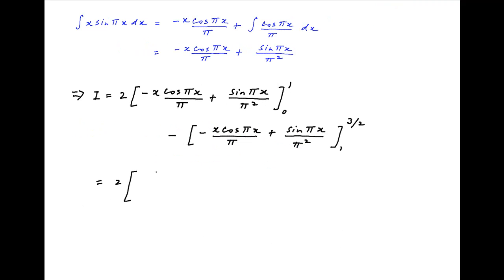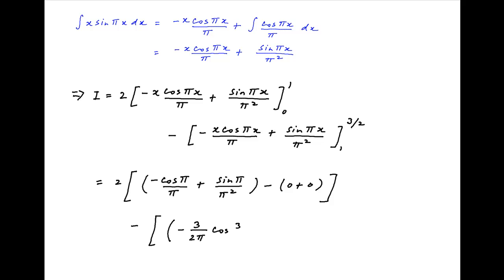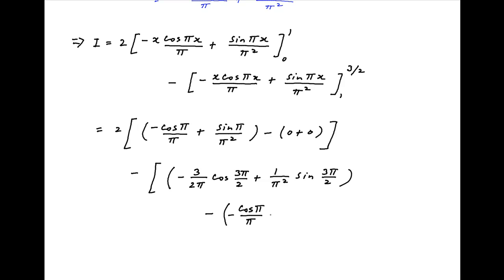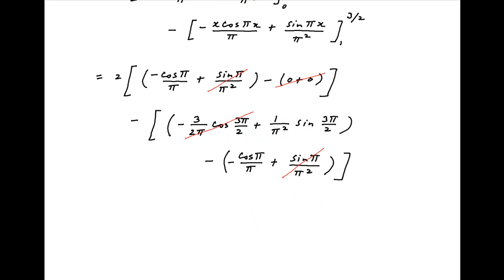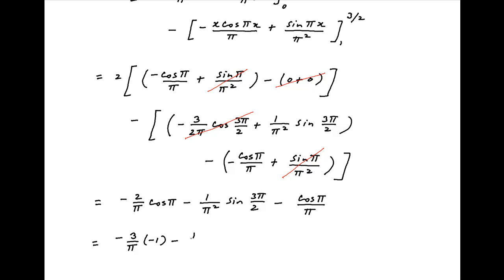Putting in the limits, I equals 2 times [(-cos(π)/π + sin(π)/π²) - (0 + 0)], minus [(-3/(2π))·cos(3π/2) + (1/π²)·sin(3π/2)] plus [-cos(π)/π + sin(π)/π²]. Since sin(π) = 0 and cos(3π/2) = 0, this simplifies to -2cos(π)/π - (1/π²)·sin(3π/2) - cos(π)/π. Since cos(π) = -1 and sin(3π/2) = -1, I equals -3/π·(-1) - (1/π²)·(-1), which gives the final answer: 3/π + 1/π².